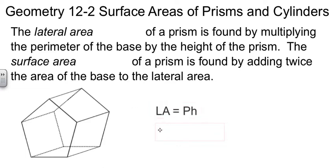In formulas, lateral area is equal to perimeter of the base times the height. The P is capitalized to remind you it's about the base. And then surface area is take that lateral area plus two times the area of the base.